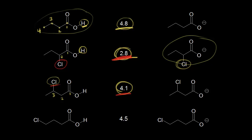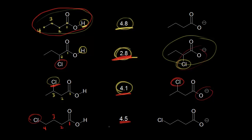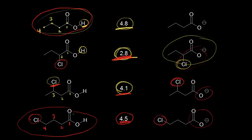The electronegative atom being further away from the negative charge decreases the inductive effect. Moving the chlorine to the fourth position — 4-chlorobutanoic acid — the pKa value rises back to about 4.5, almost back to 4.8. This chlorine is further from the negative charge, greatly diminishing the inductive effect. This compound is still slightly more acidic than butanoic acid, but the effect is greatly reduced.